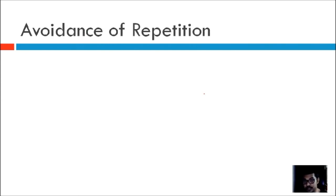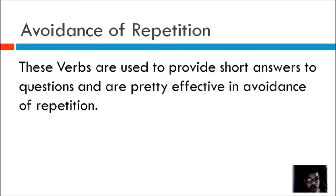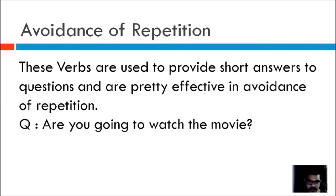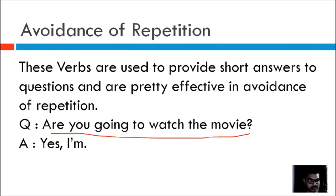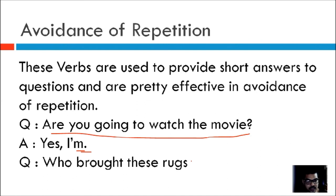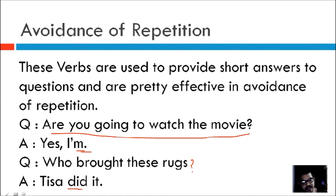Anomalous verbs are used to avoid repetition. They provide short answers to questions and are effective in the avoidance of repetition. For example, if asked 'Are we going to watch the movie?' your answer would be 'Yes, I am' or 'No, I am not' — avoiding repetition of the whole sentence. Similarly, for 'Who brought these rugs?' the answer would be 'Tisha did.' So anomalous finites help in avoidance of repetition.